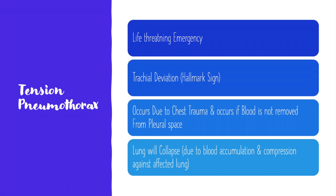Chest trauma can also elicit other conditions such as flail chest and cardiac tamponade, in addition to hemo and pneumothoraxes. Due to blood accumulation, the blood can push against the unaffected lung and fully compress it, eventually leading to lung collapse. Therefore, oxygen maintenance and blood drainage are both critically important here.